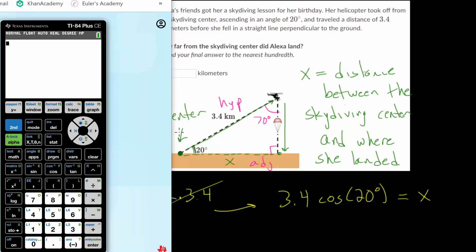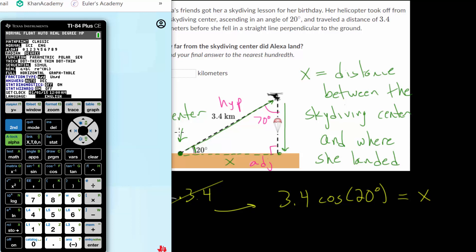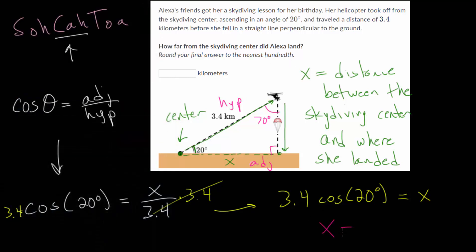And we're going to clear out what we had before and type in this 3.4 times by the cosine of 20 degrees. And we're still in our degree mode, but it never hurts to check. And we get 3.19 if we're going to the nearest hundredth. So x is 3.19, and that's kilometers. So that's what we would put in the box here.